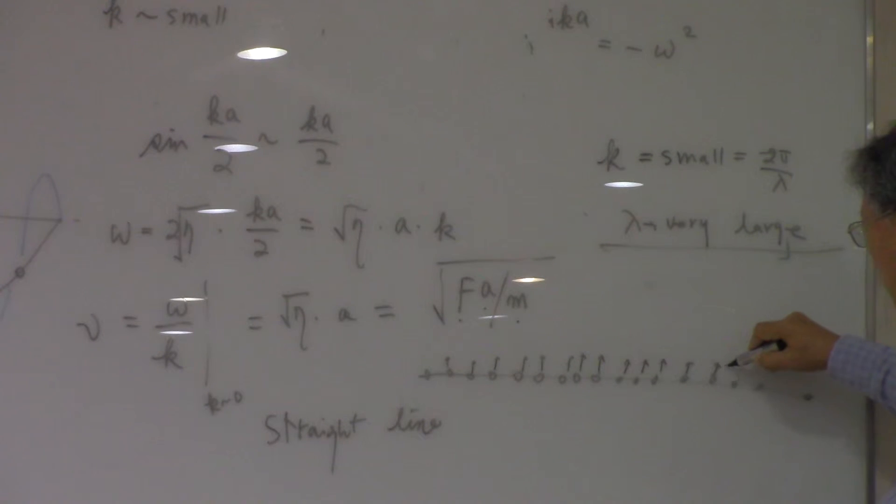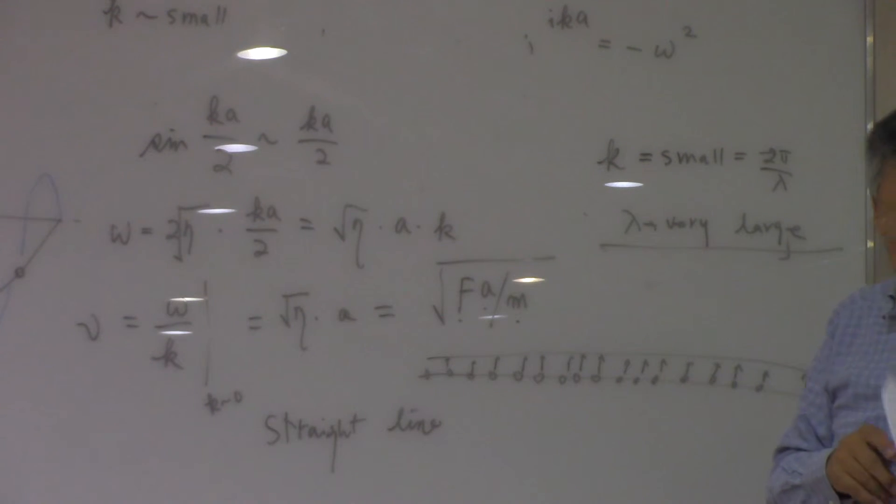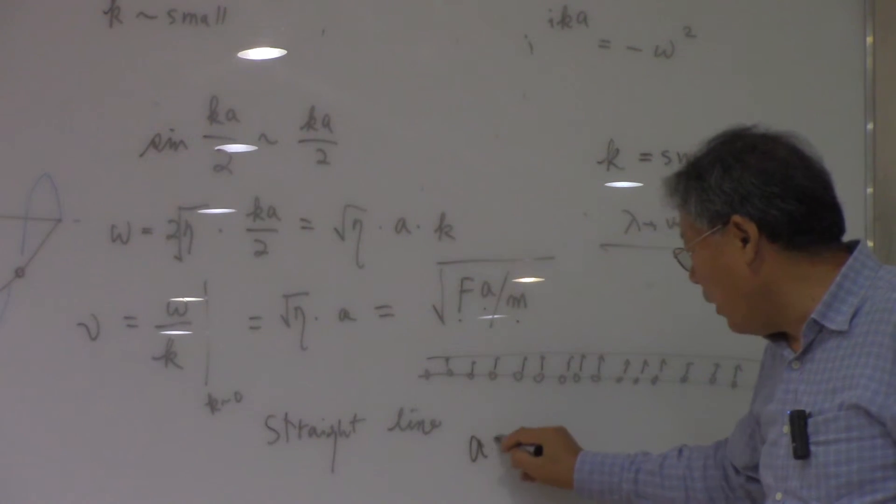So the lambda becomes infinity. All atoms are moving in the same direction, so the center of mass is going to be changed when K is very small. And we call this acoustic wave.